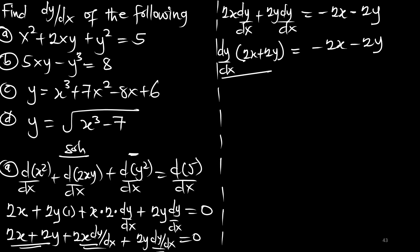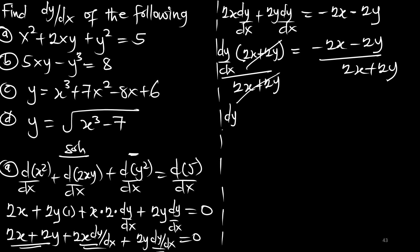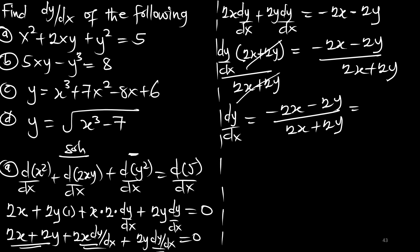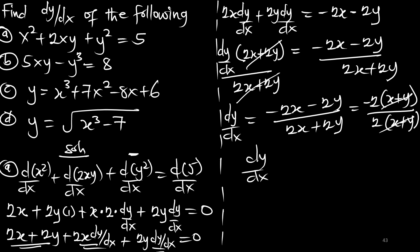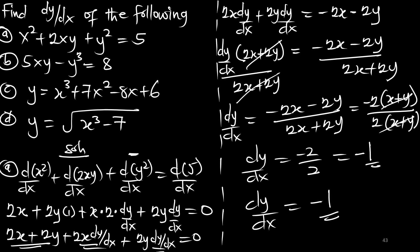Dividing both sides by 2x plus 2y, the derivative is negative 2x minus 2y over 2x plus 2y. Factoring out negative 2 from the numerator gives x plus y, and 2 from the denominator gives x plus y. These cancel, so dy/dx equals negative 1. That is the derivative for part A.